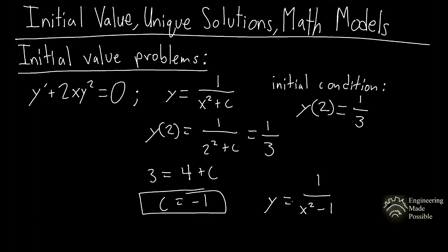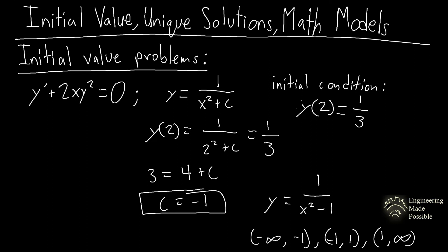So the solution is y = 1 / (x² − 1). The next part is to find the largest interval over which this solution is defined. Since x cannot equal ±1 (denominator becomes zero), the solution is defined on (−∞, −1), (−1, 1), and (1, ∞). Since the initial condition x = 2 is in the region (1, ∞), the largest valid interval is (1, ∞).